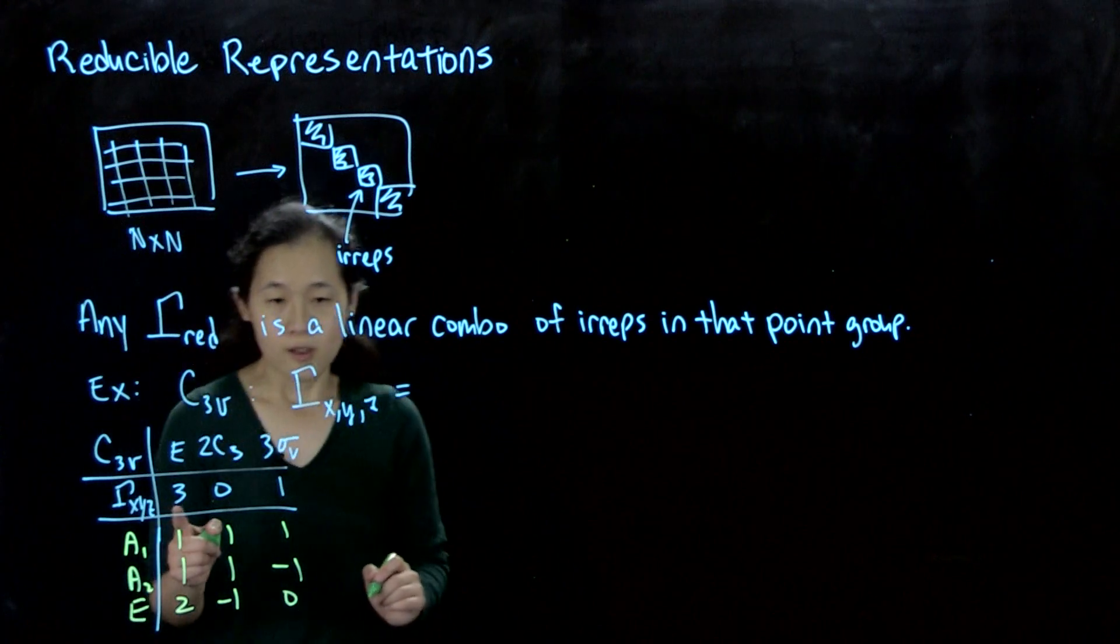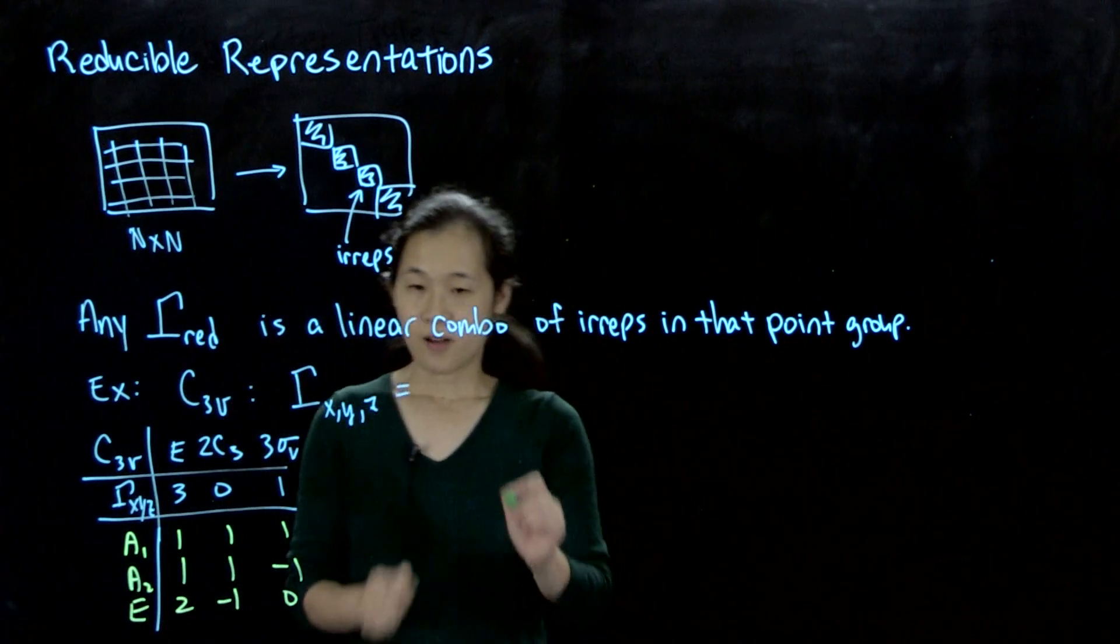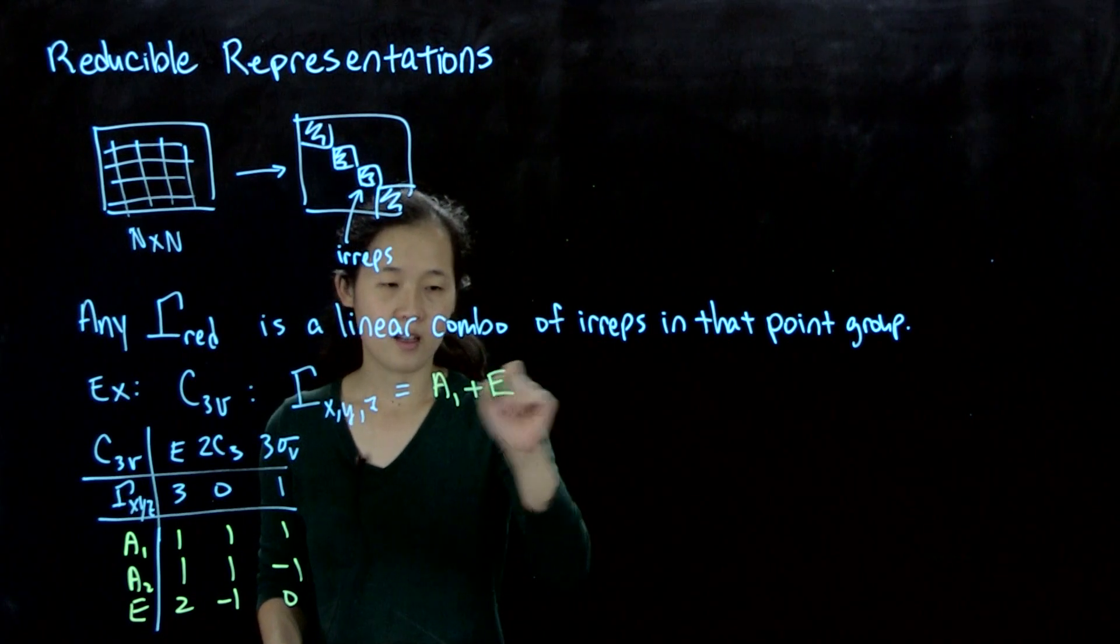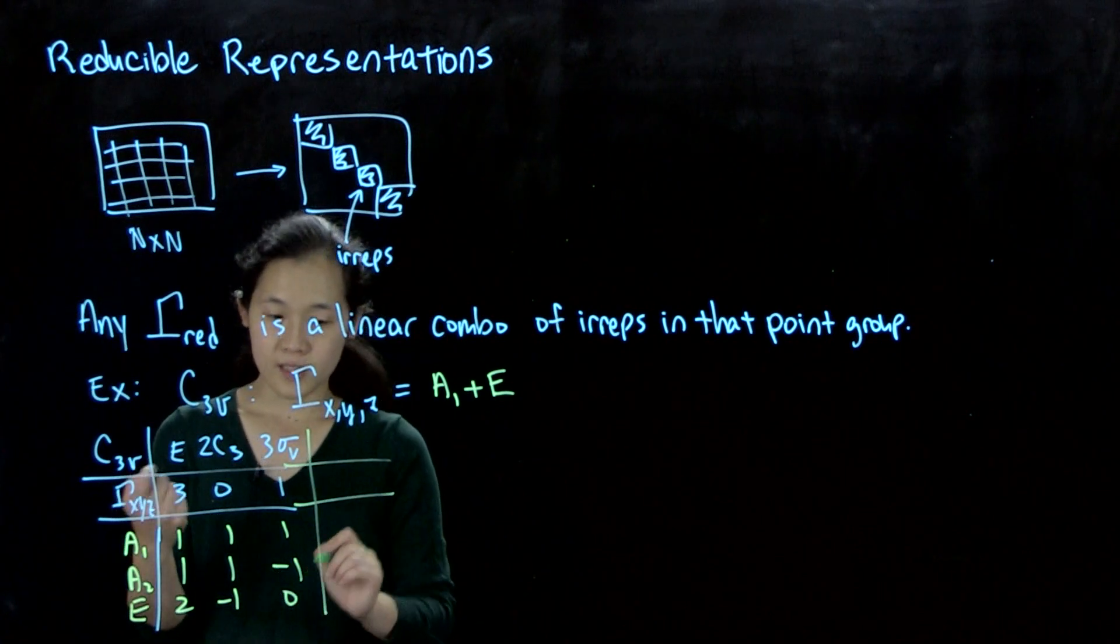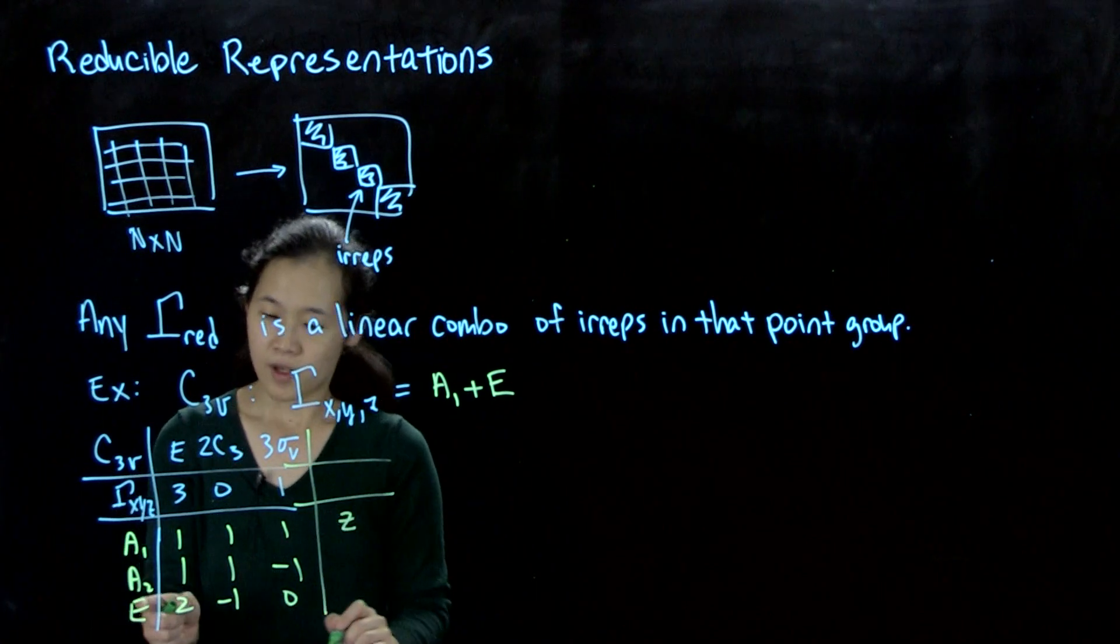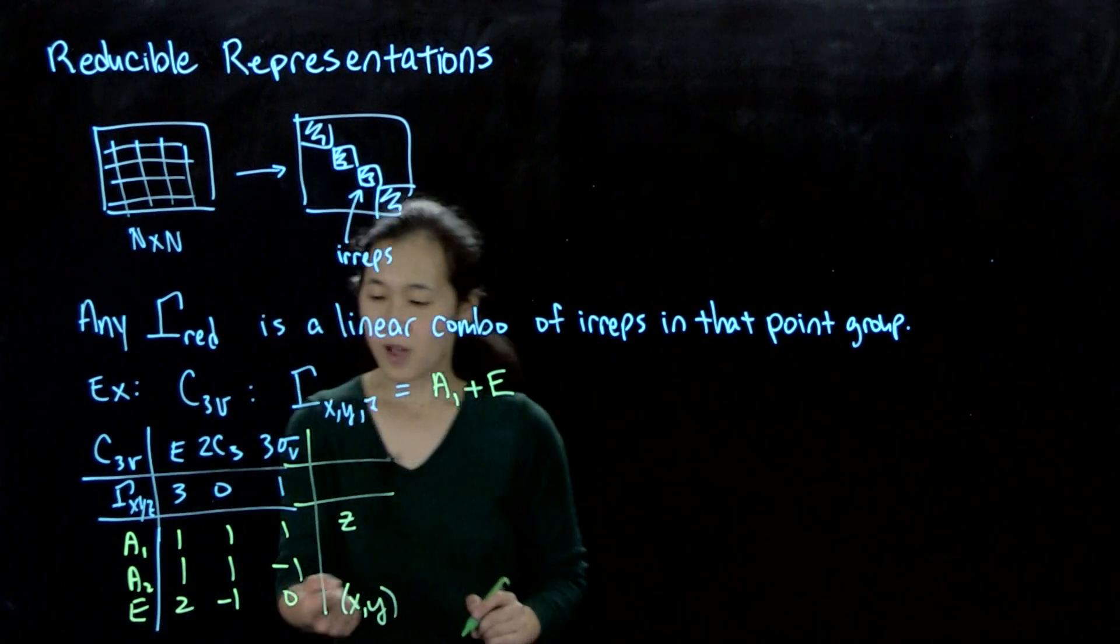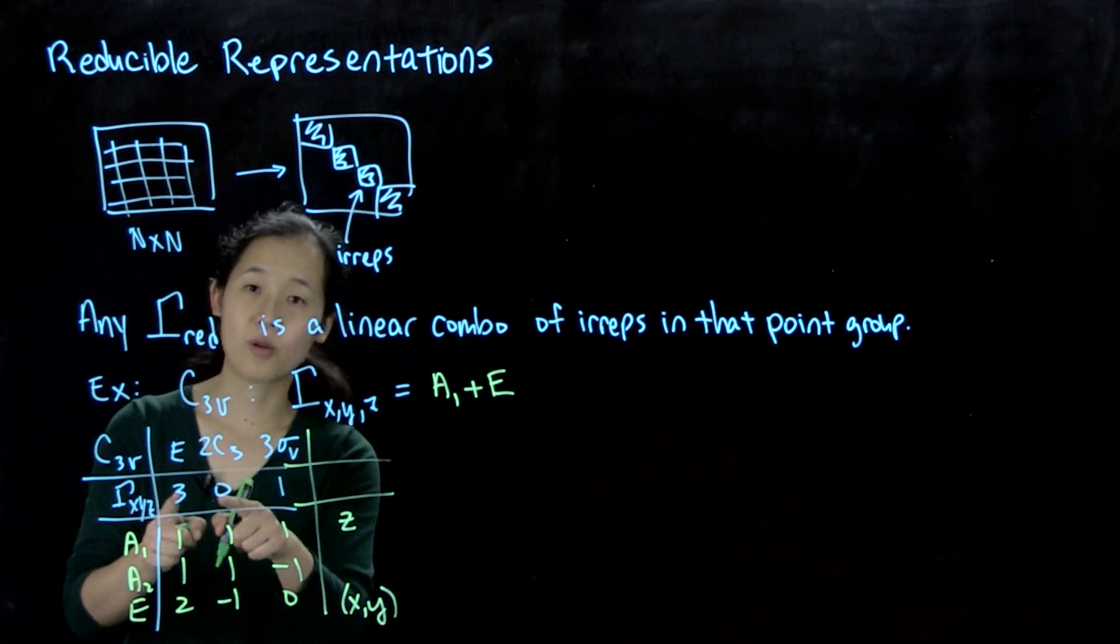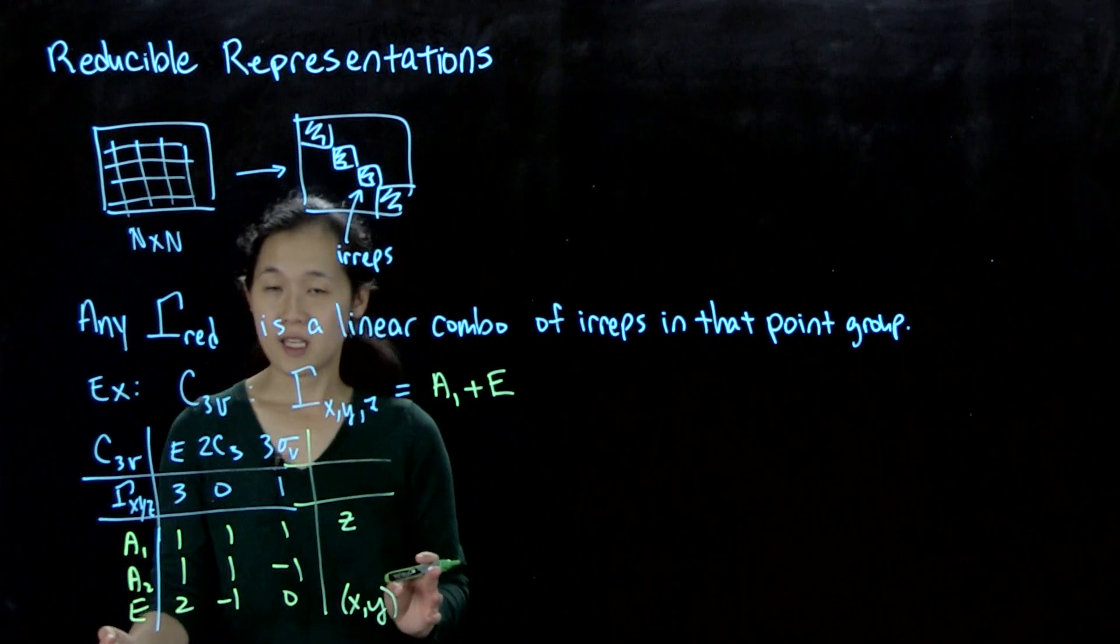What we were able to do was break this gamma x, y, z down into a1 plus e. As you can see, this is because when we block-diagonalized it, we saw that z always transformed by itself, but x and y transformed together. When you add these two together, we see that 2, minus 1, 0 plus 1, 1, 1 equals 3, 0, 1. So it's a linear combination of the a1 and e irrep.